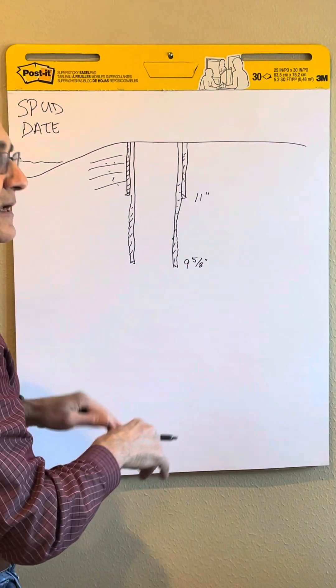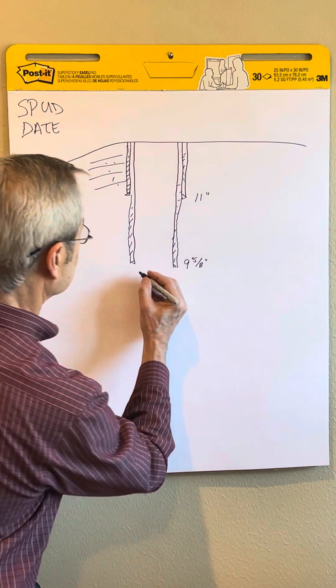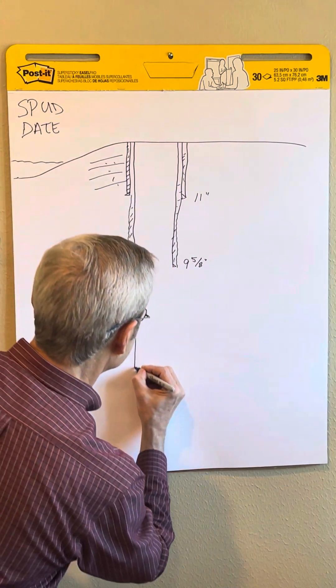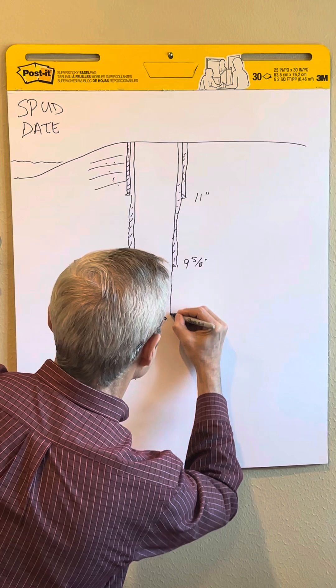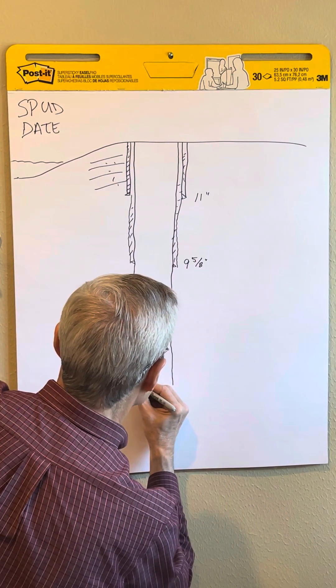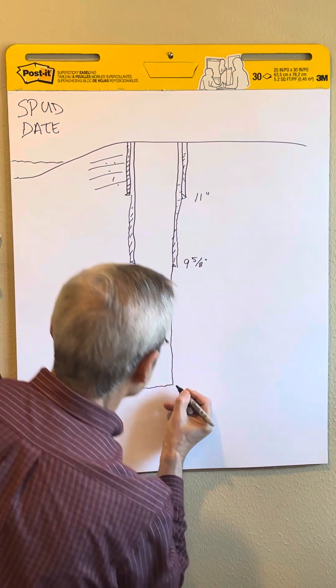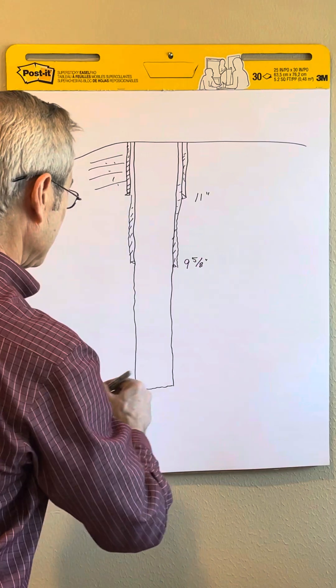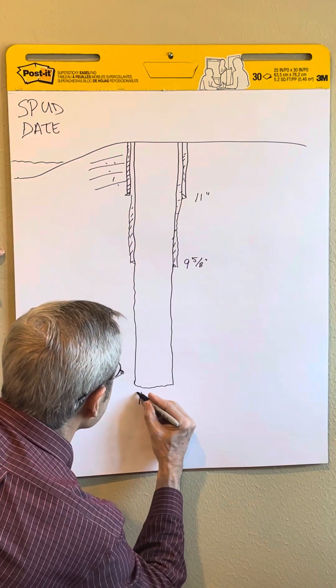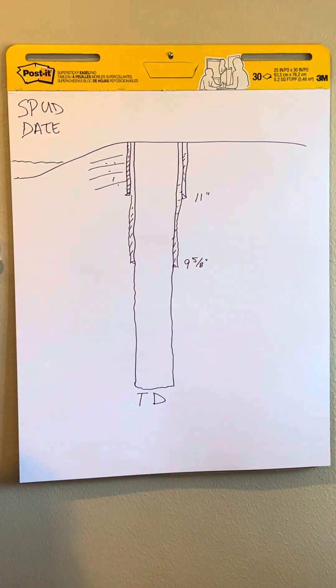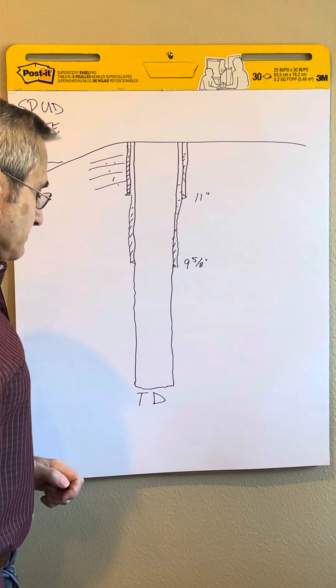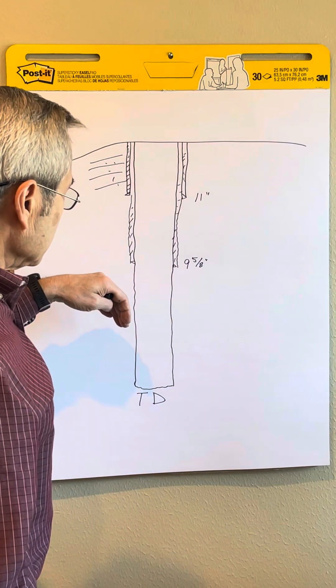Now you're going to continue drilling until you reach your targets where you think the oil or gas is. You drill way down, and when you reach the total depth of where you plan to drill, you call that the TD or total depth.